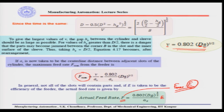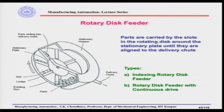The next feeder is the rotary disk feeder. This configuration is shown in a pictorial view. Parts are carried by slots in the rotating disk around the stationary plate until they are aligned with the delivery chute.